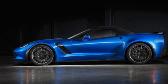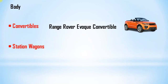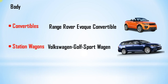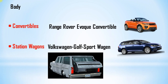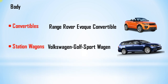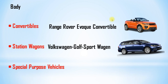Convertible roofs are mostly folding construction made from cloth. Other types include retractable hard tops made from metal or plastic, and detachable hard tops where a metal or plastic roof is manually removed and stored in the trunk. A station wagon is defined as an automobile with one or more rows of folding or removable seats behind the driver, no separate luggage compartment, and an area behind the seats accessible through a tailgate. An example is the Volkswagen Golf Sports Wagon.